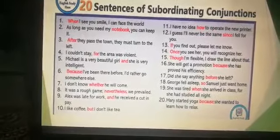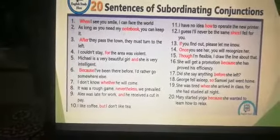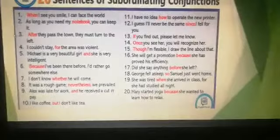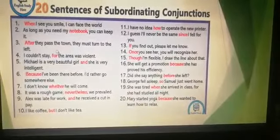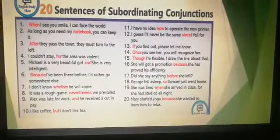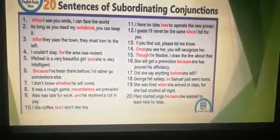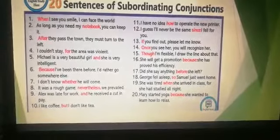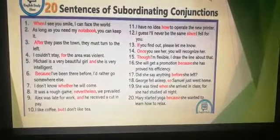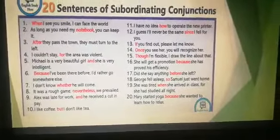Here are a few more examples of subordinating conjunctions: 'When I see you smile, I can face the world.' 'As long as you need my notebook, you can keep it.' 'After they pass the town, they must turn to the left.' 'I could not stay, for the area was violent.' You can go through these sentences to get a clear picture of subordinating conjunctions. In the next video, I will teach types of subordinating conjunctions and correlative conjunctions.